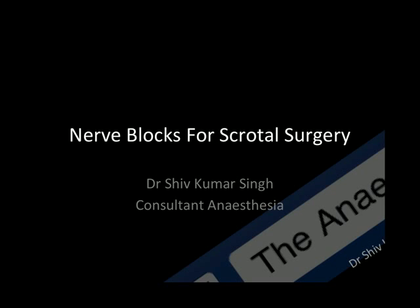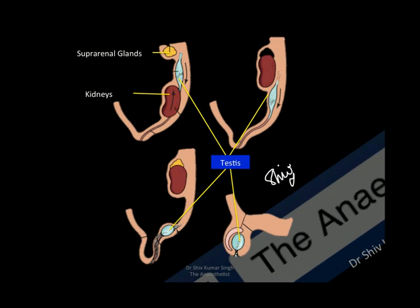In this video I'll be discussing nerve blocks for scrotal surgery. To understand nerve blocks for the testis and the scrotal sac, we have to understand the embryological origin of these structures. The testis are embryologically derived from the same level as the kidney and therefore share a common level of innervation — T10-L1 for pain conduction and T10-L2 for sympathetic innervation.